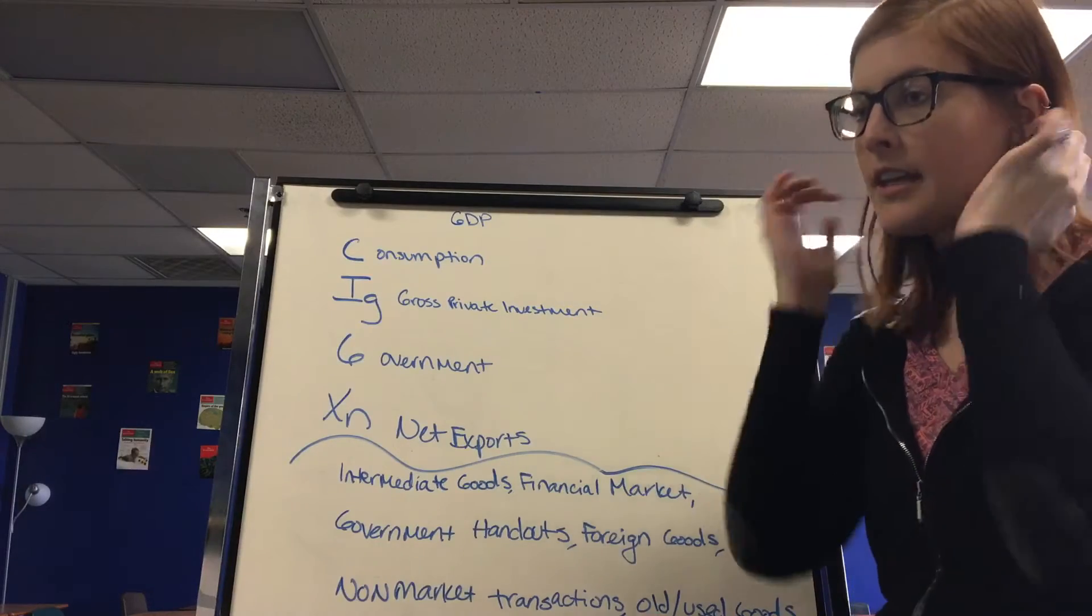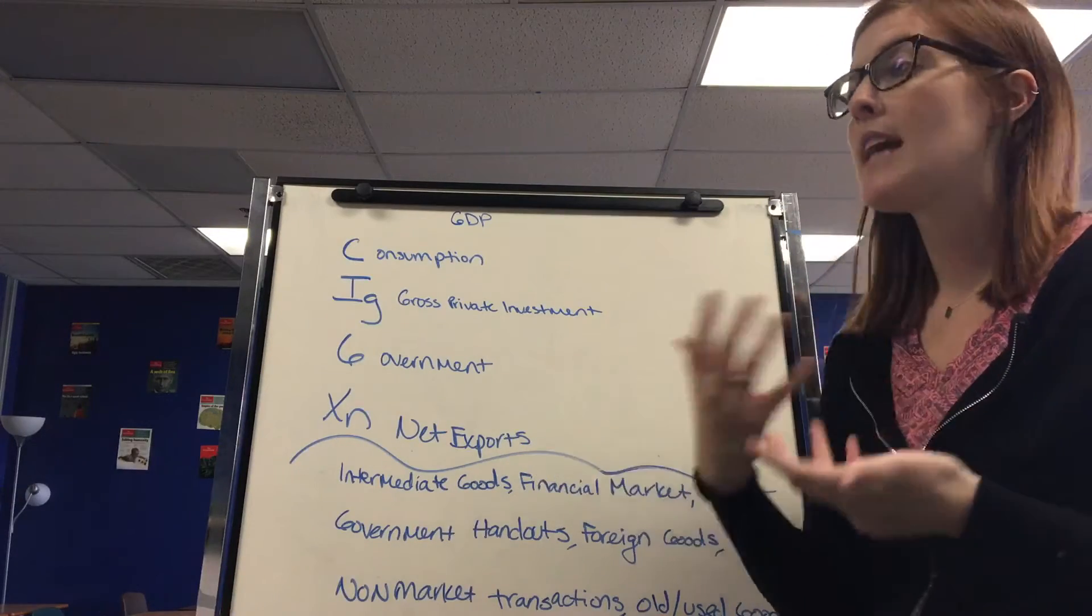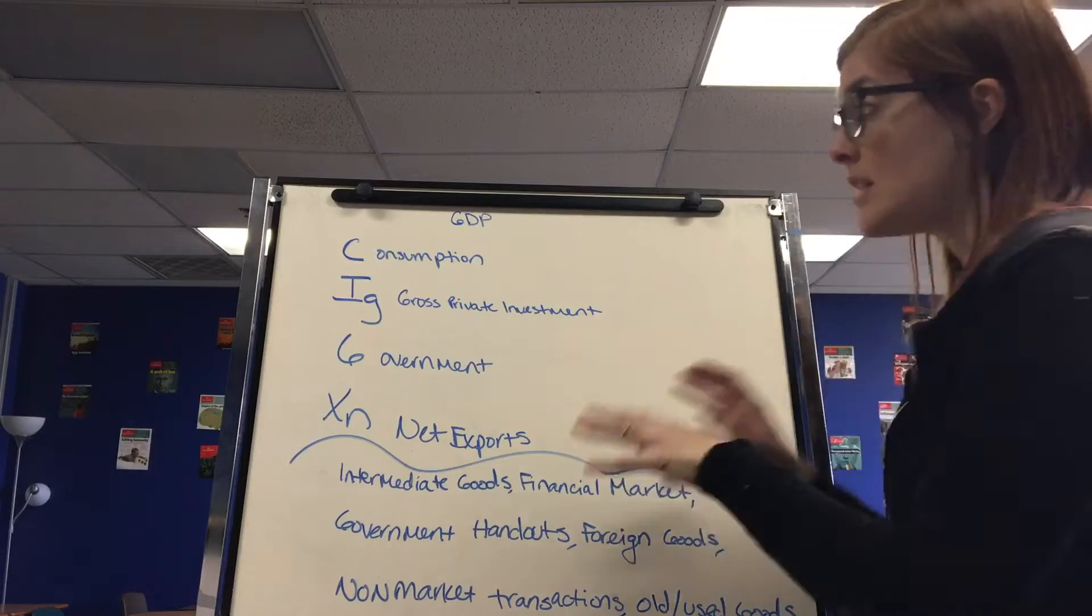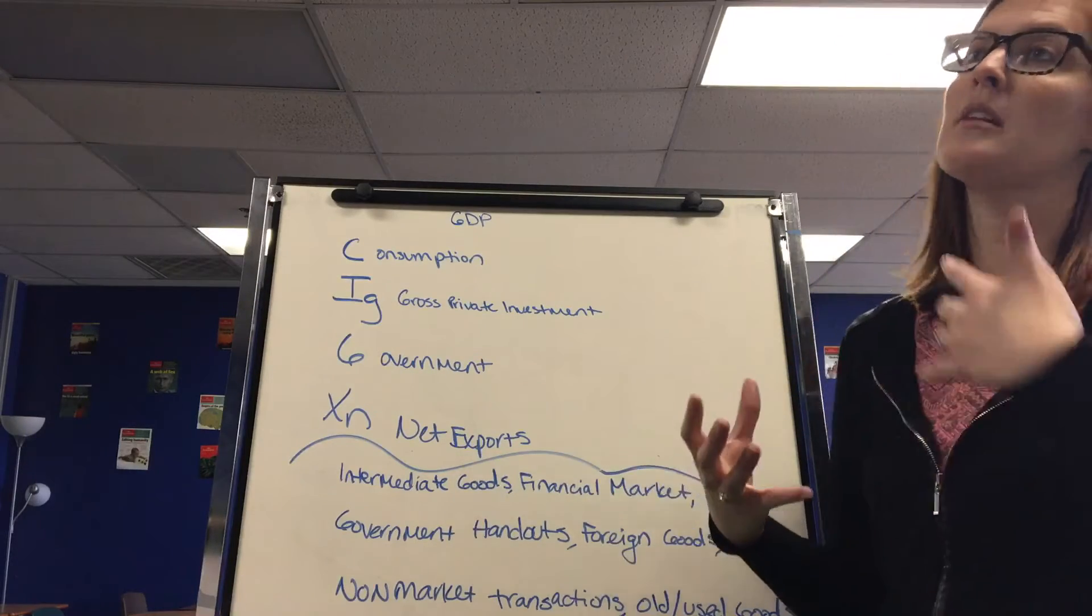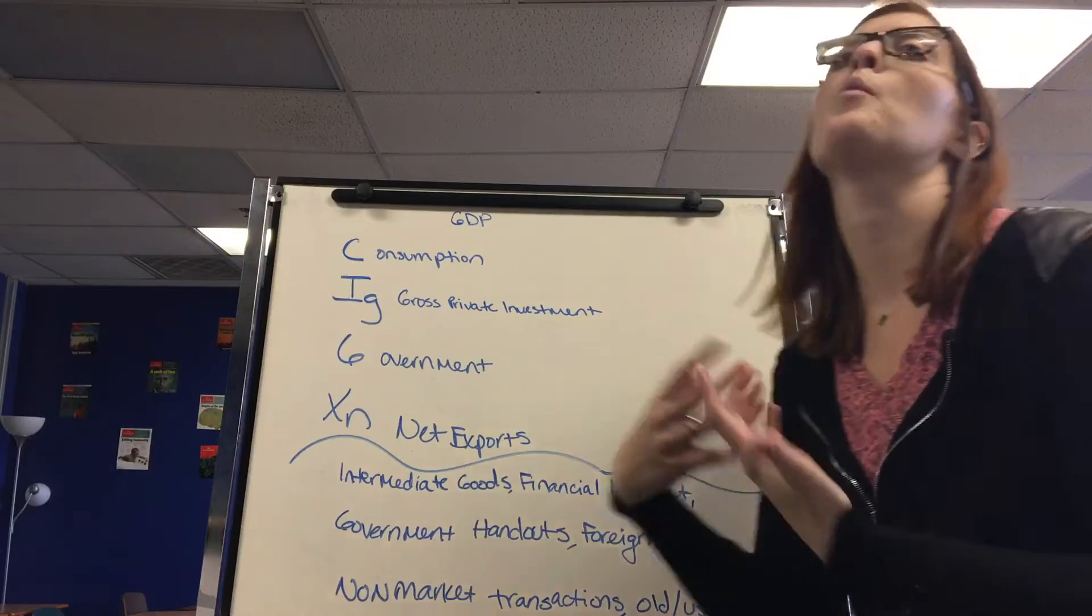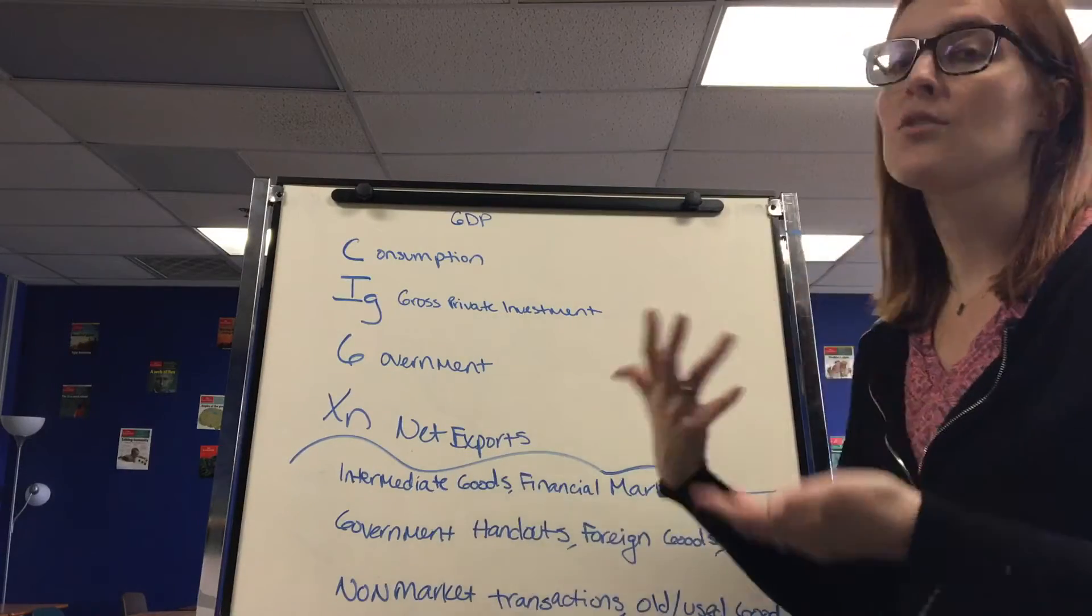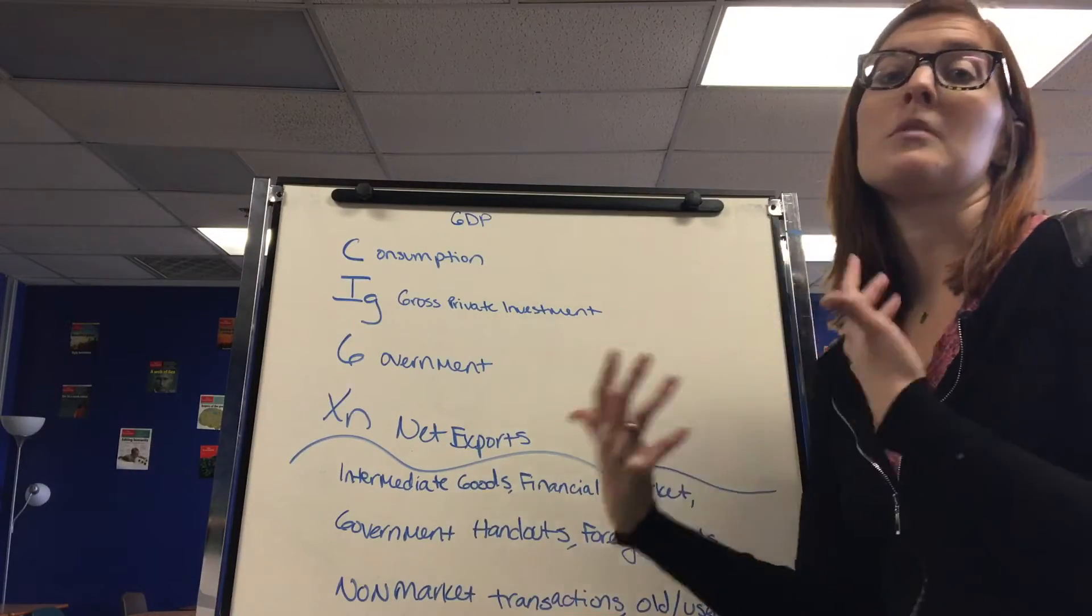There's another way of calculating growth called GNP, Gross National Product. We use GDP to measure our economy, but GNP looks at American companies producing goods, no matter where they produce it. So that looks at those foreign produced American companies.